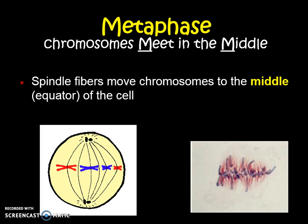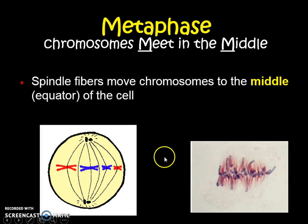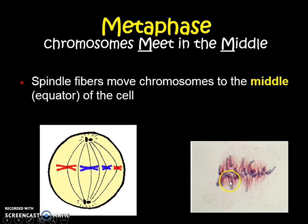Next is metaphase — the M in PMAT. This is when the chromosomes meet in the middle. The M reminds us of 'meet in the middle' because that's exactly what's happening. Remember those spindle fibers from the centriole? They grab right onto the chromosomes and yank them until all the chromosomes line up in the middle — we call this the equator of the cell. In the real image it's not as clean, but this is our easy-to-identify metaphase: chromosomes aligning in the middle.